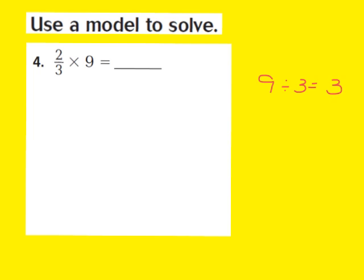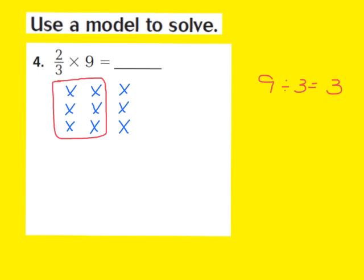Now I'm going to draw our array showing 3 equal groups of 3: here's 1 group with 3 in it, here's a 2nd group with 3 in it, and here's a 3rd group with 3 in it. Our next step is to identify the numerator, which in the fraction 2/3rds is a 2. So I need to circle 2 of the 3 equal groups of 3 — group 1 and group 2. Now I count the circled X's: 1, 2, 3, 4, 5, 6. So 2/3rds times 9 equals 6, and 6 becomes the product.